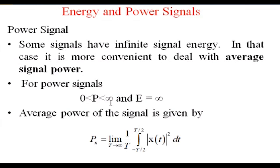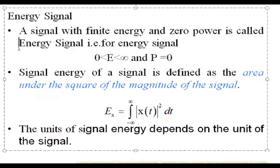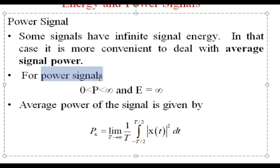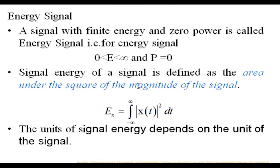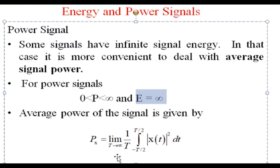For power signals, power is between zero and infinity but energy equals infinity. An energy signal is a signal with finite energy — whenever we say energy signal, the energy of that signal should always be finite. When we say power signal, the power of that particular signal should be finite, irrespective of the energy. And where energy is infinite, the average power of the signal is zero.